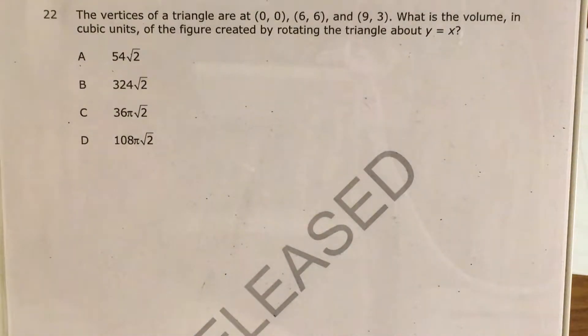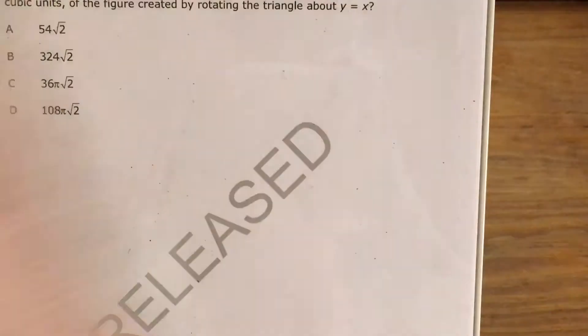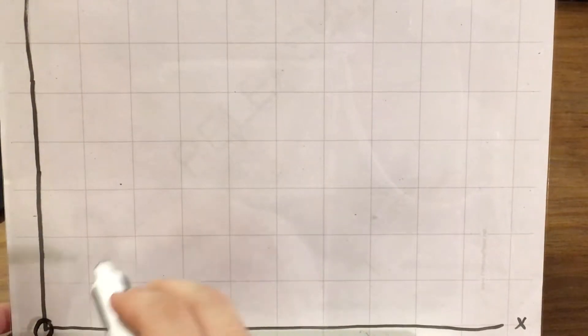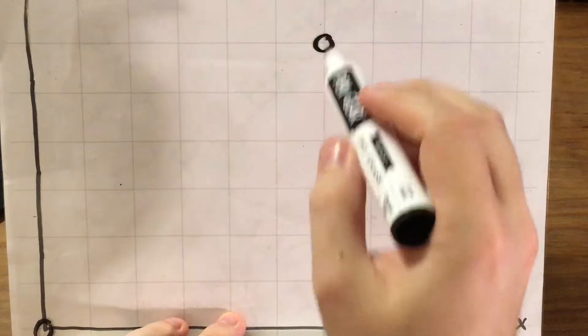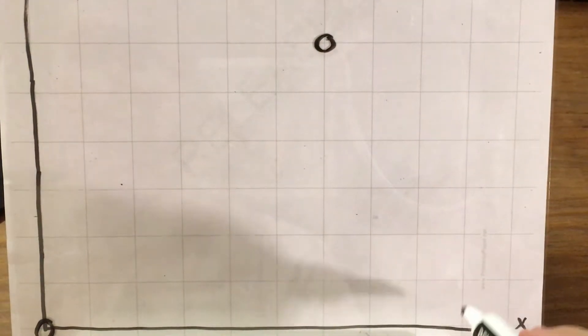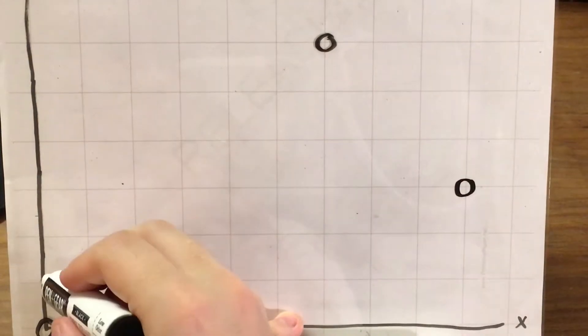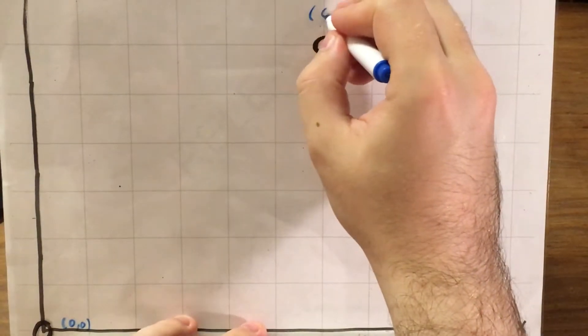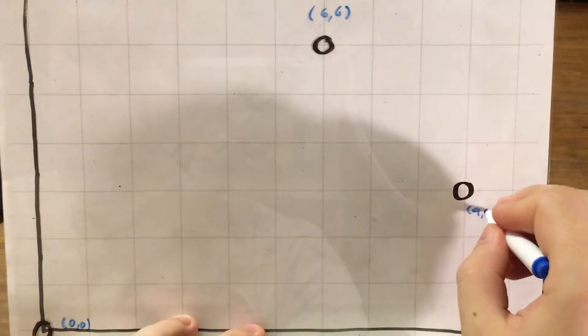So this is going to cover a lot of ground in terms of geometry, but let me go ahead and get out my graph paper that I made and actually graph the three points it gives me as well as the line. So (0,0) is this one right here. (6,6) is up here. And then (9,3) is right here. Let me name these.